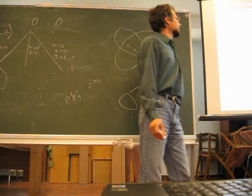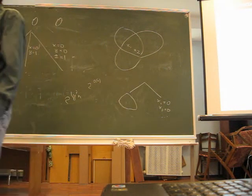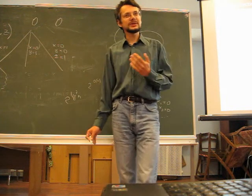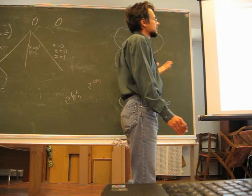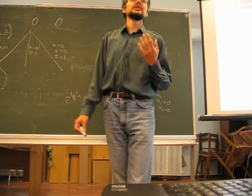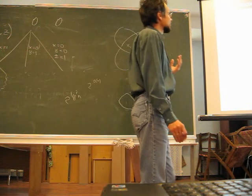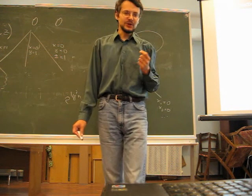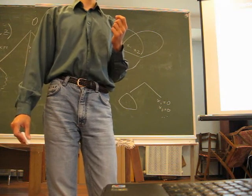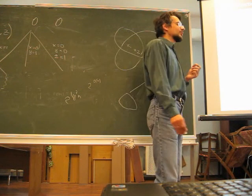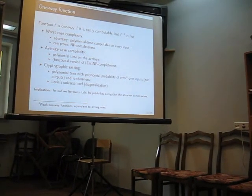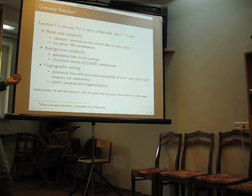Another is average case complexity which is already closer to our needs. Here is when we are interested in time that is polynomial on the average. Sometimes it is exponential, sometimes it's not. Here we also have completeness results, but well actually this setting is in the middle of worst-case complexity and cryptographic setting, because on one hand it's not what cryptographers usually do. On the other hand, we already can't do too much in it because we have not so nice combinatorial problems. We can't do much in the middle of this. And the final is the cryptographic setting.